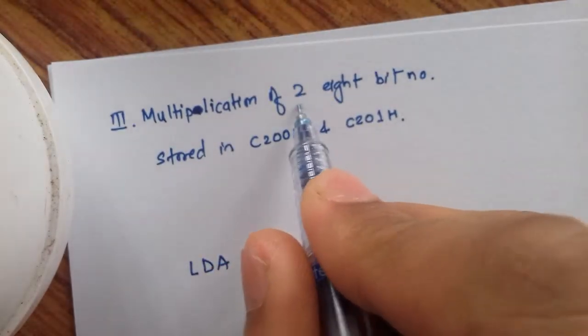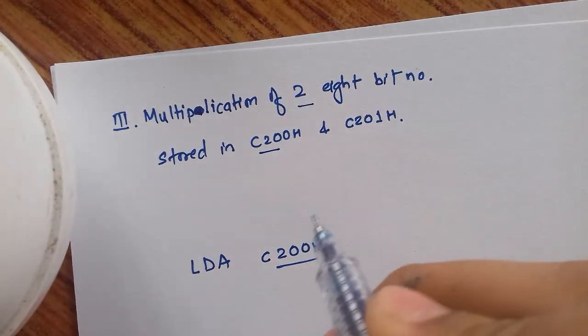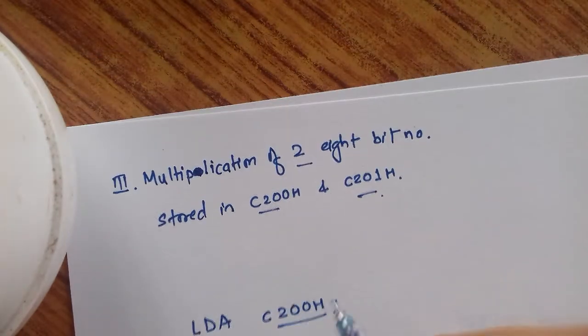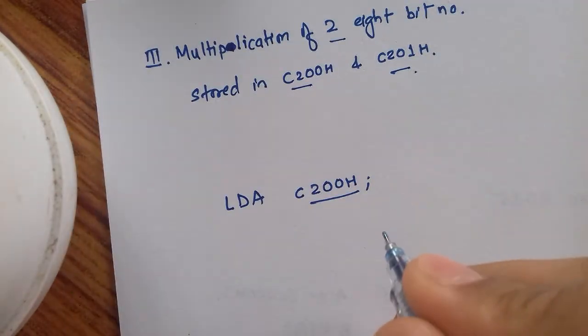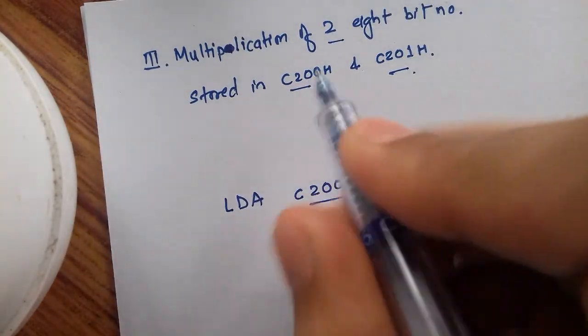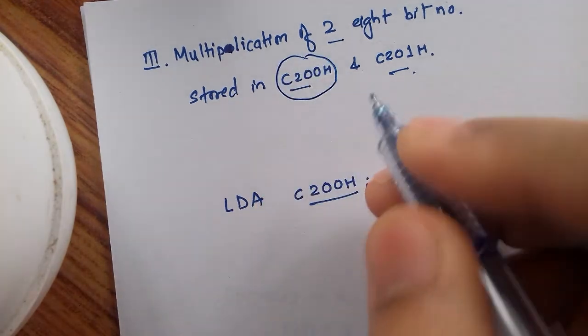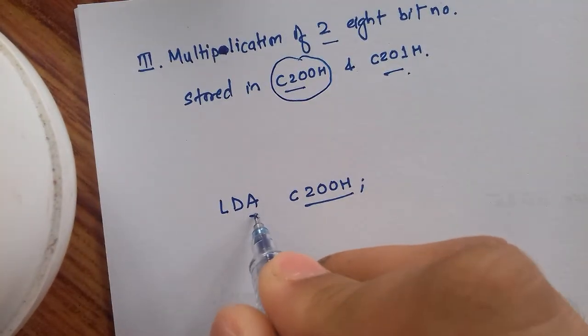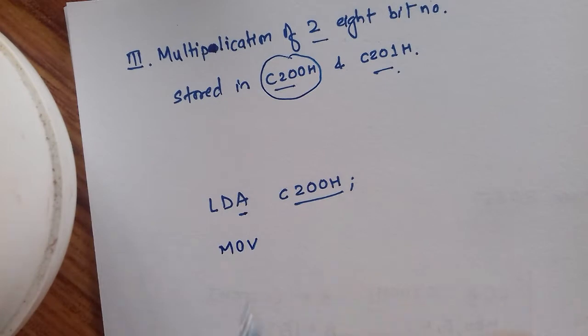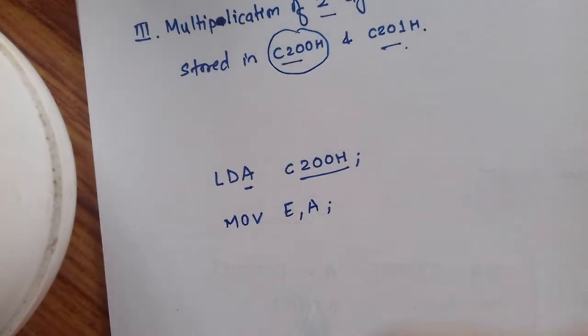Now we will perform a multiplication of two 8-bit numbers stored in C200 and C2001. First, we copy the content of C200H into the accumulator. Then we move the content of the accumulator to another register, in our case register E.